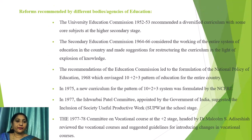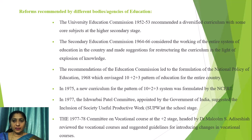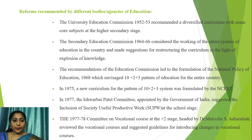Reforms recommended by different bodies and agencies of education: The University Education Commission of 1952–53 recommended a diversified curriculum with some core subjects at the higher secondary stage. The Secondary Education Commission of 1964–66 considered the working of the entire system of education and made suggestions for restructuring the curriculum in light of the explosion of knowledge. Its recommendations led to the formulation of the National Policy of Education in 1968, envisaging the 10+2+3 pattern of education.